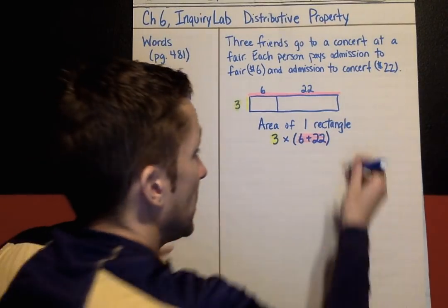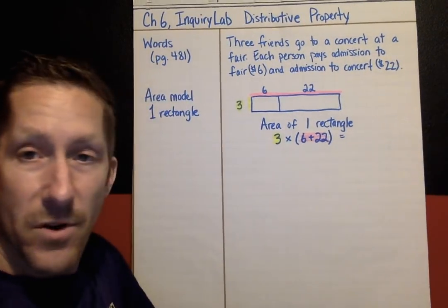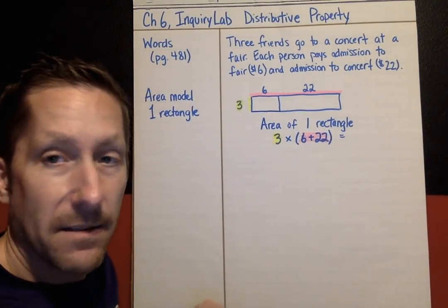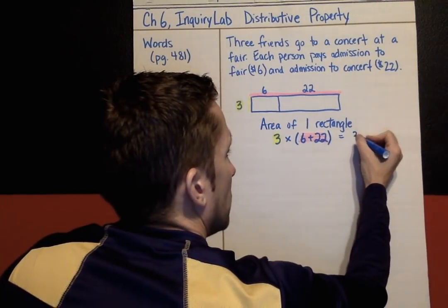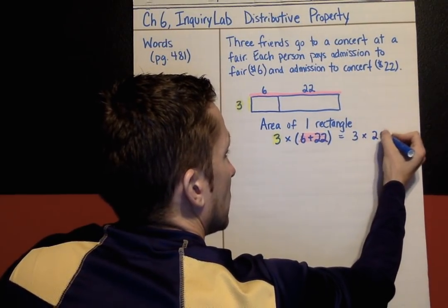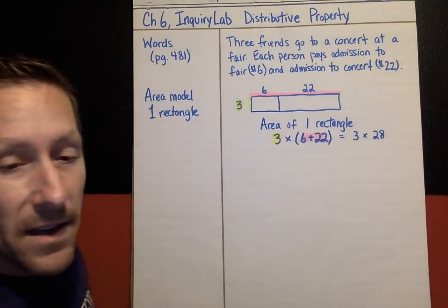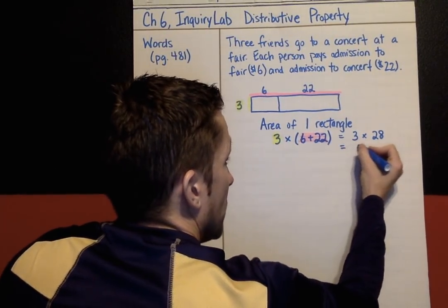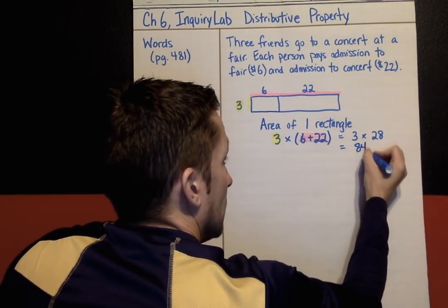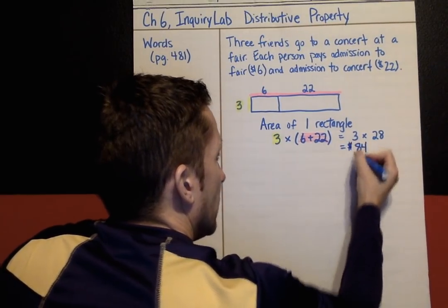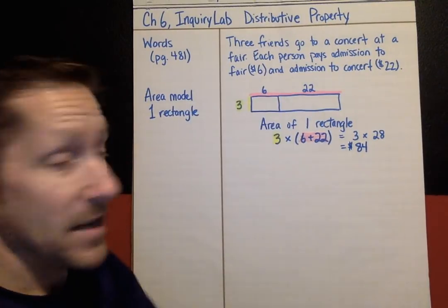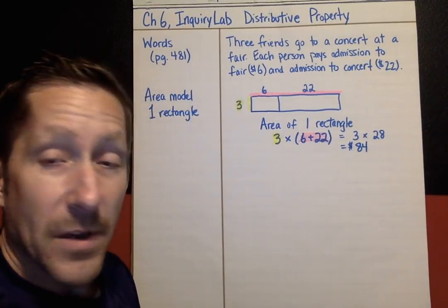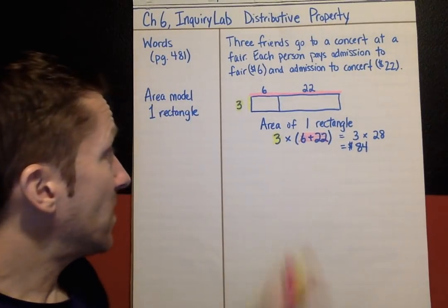It's both of those put together. So one way we could model this situation is three times (6 plus 22), where the pink side is 6 plus 22 and three is the side representing three friends. We know how to do that using order of operations. Six plus 22 makes 28, so it would look like three times 28. And if we multiply 3 times 28, we get $84 — that would be the total for the friends to go to the fair and the concert. This is one way we could model it.